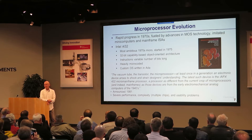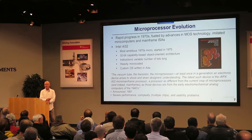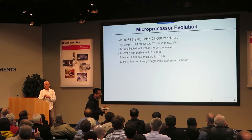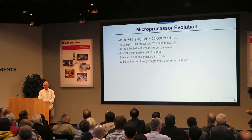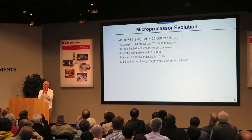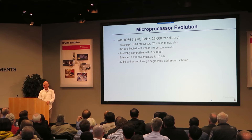Gordon Moore, trying to invent the future and told they were going to be late, started an emergency project. He gave a team at Intel one year to invent a new instruction set, build a chip, and bring it to market as the 16-bit successor to the 8080. They spent three whole weeks designing the instruction set — about ten person-weeks altogether. They basically extended the 8080, extended the address space through segmentation. It was only 30,000 transistors and they brought it to market with no fanfare, unlike the 432.